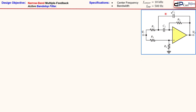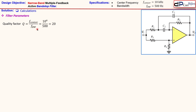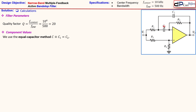We start with the filter parameter calculation. The quality factor Q = center frequency / bandwidth = 10,000 / 500 = 20. This is a pretty high quality factor, which makes this a very narrow band filter. For the component values, we again select equal capacitors: C1 = C2 = C.